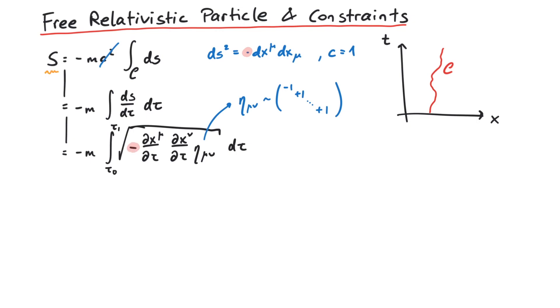This is the action of a relativistic point particle of mass m traveling in a d-dimensional Minkowski spacetime. One thing to note here is that this action is invariant under a reparametrization of tau.